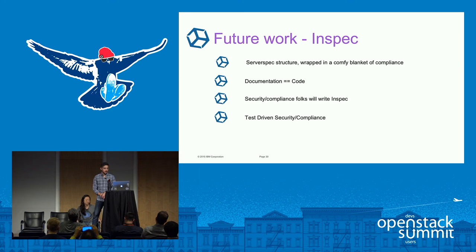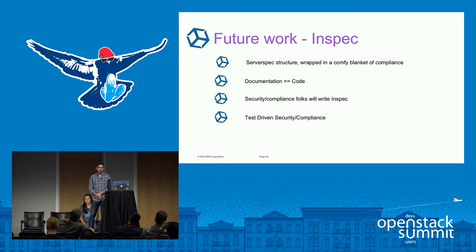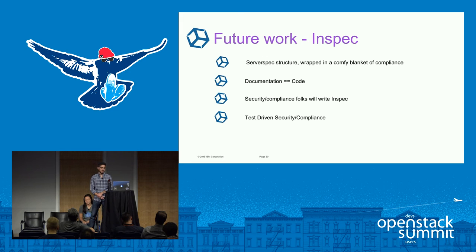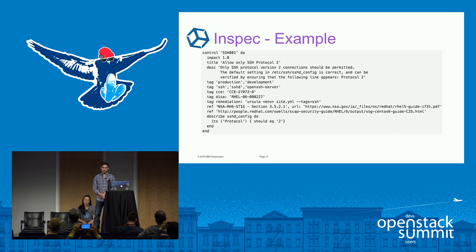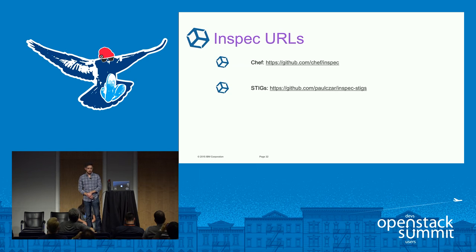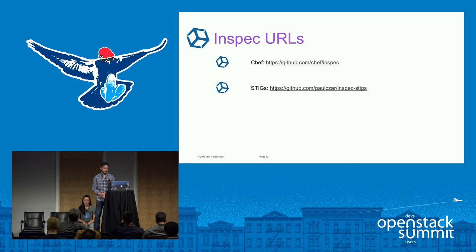Some future work: we're going to move away from ServerSpec and move on to InSpec. It's essentially like ServerSpec — it's based on RSpec — but it's a much richer compliance-focused DSL. It increases our DevOps culture to include security and compliance folks, allowing them to do test-driven development. Here's one example: much like our tech spec rules, it has a unique ID code, plenty of metadata required by security and compliance, and a description explaining the need for this check — for example SSH protocol. Chef provides InSpec, and Paul has graciously provided the RHEL 6 STIGs, and he's working on more to come.